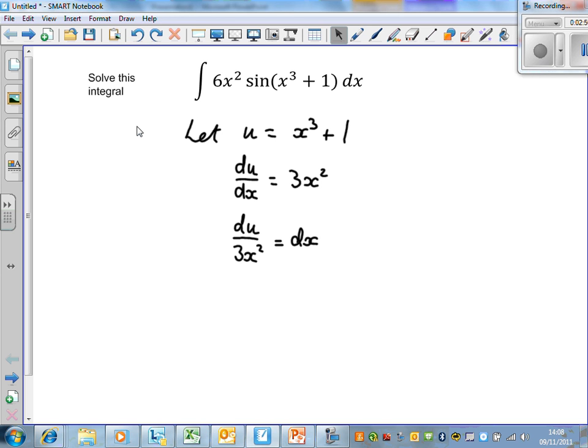Again, this ain't rocket science. So du over 3x² is equal to dx. So we're now in a position where we can substitute our dx for this, and we can use this substitution rule and put it all back into this integral to see how this simplifies out.